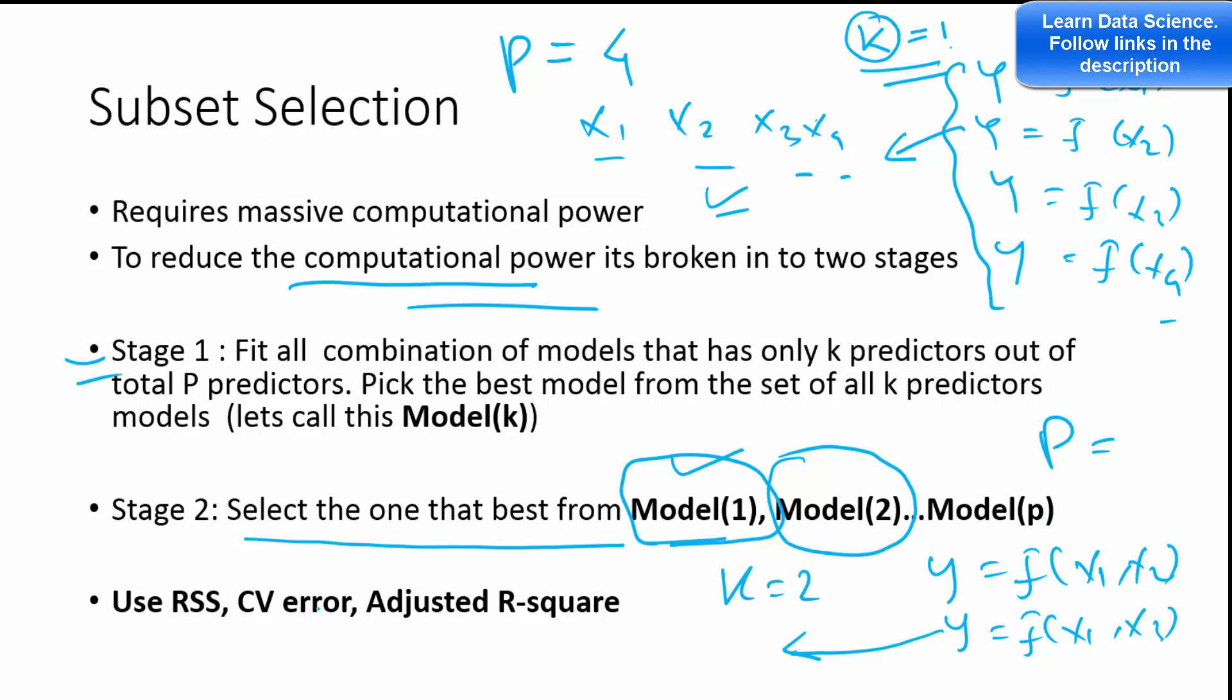How do you select the second stage model? Just use one of these metrics, whether it's RSS in the case of regression model, cross validation error, or adjusted R-square. So you can use any one of these metrics to find out the best one.